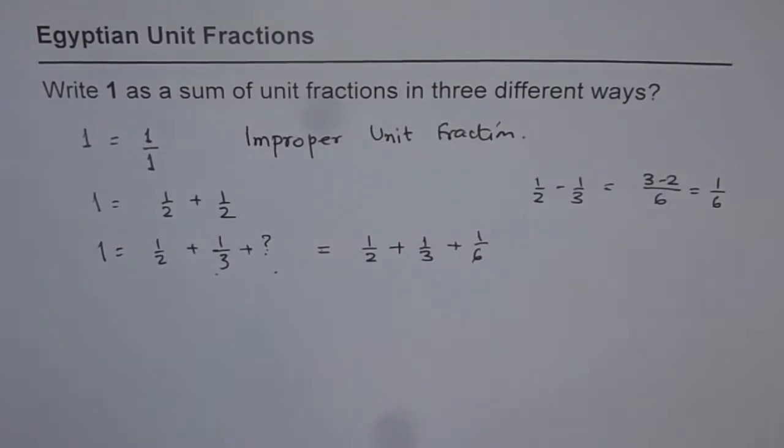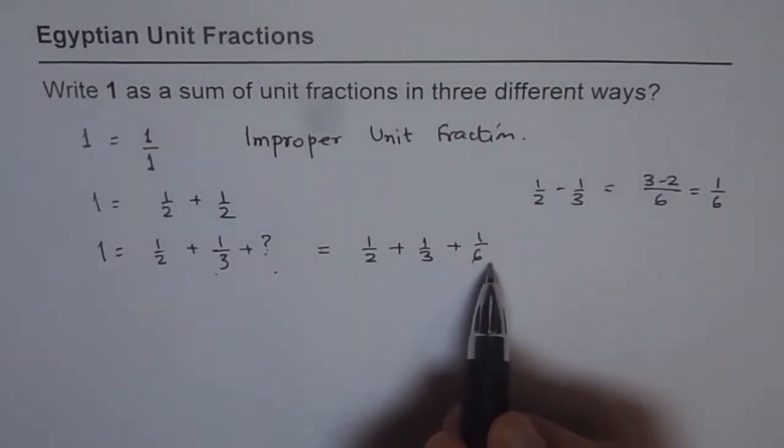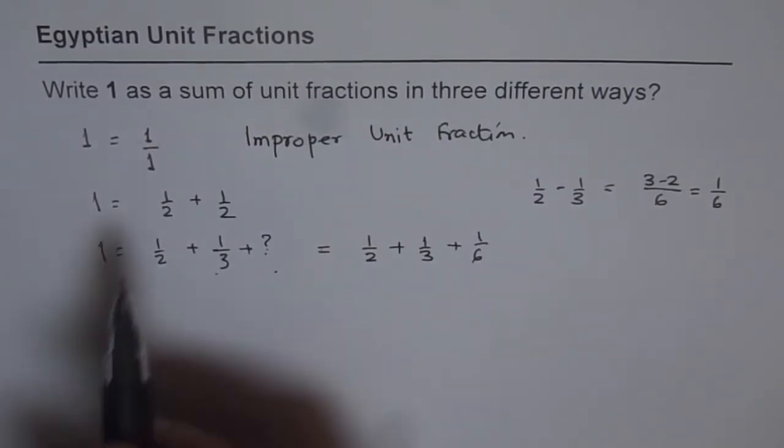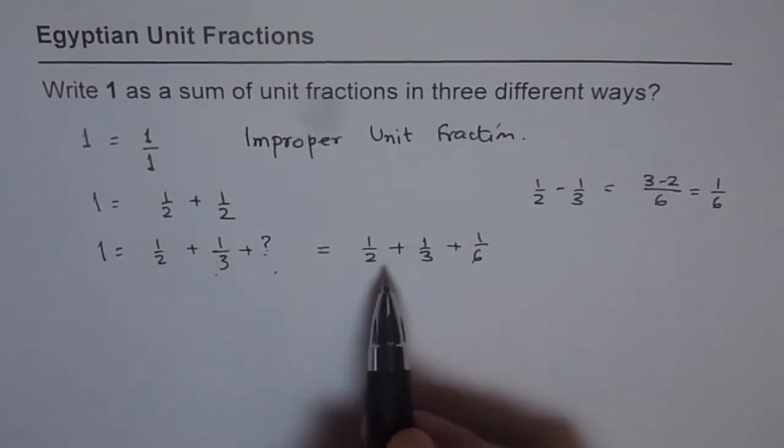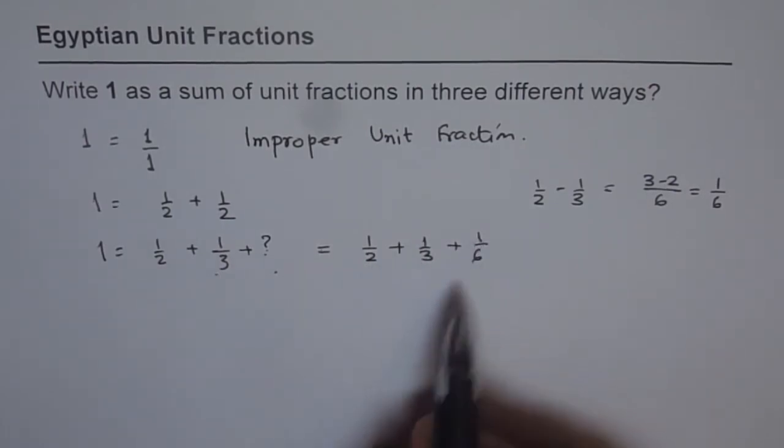That should give us 1. So what you can do is, you can test it out, whether it is really correct or not. So we got one way, which is just 1. One way is half plus half. Another way, half plus 1 third plus 1 over 6.